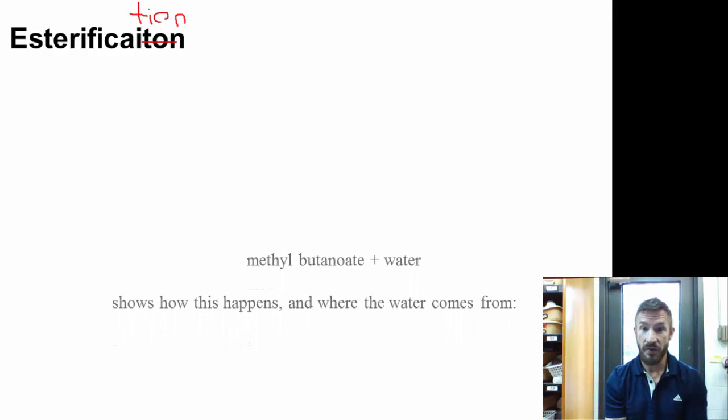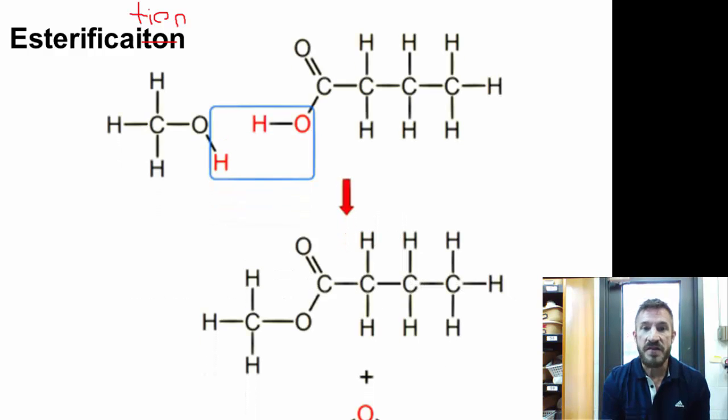This time, we're going to take methyl butanoate and water as our product. We're going to look and see what you start with. For this, the methyl comes from the alcohol. So, the alcohol we have to start with is methanol. It's one carbon and an OH. We know that's methanol.